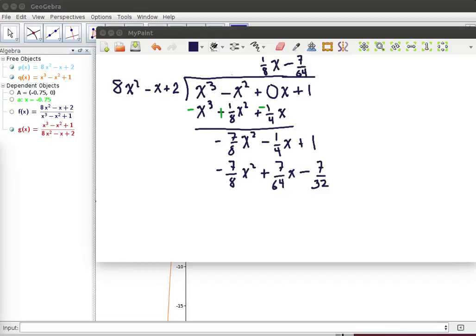Now change the sign and add. We're changing the sign and adding because we're going to carry out this subtraction. So we need to add these up. This will be 0 here. We'll need to get a common denominator. 1/4 is 16/64, so adding that -16/64 to the -7/64 gives us -23/64.